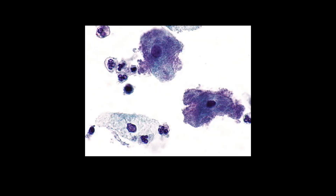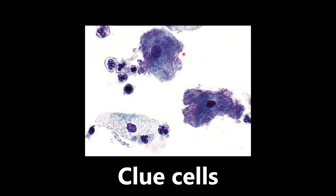Moving on to histology, we have an example of clue cells. What we're looking at is vaginal epithelial cells covered in Gardnerella bacteria, which is the cause of bacterial vaginosis. If we see one big cell covered in smaller Gardnerella bacteria like this, we want to be thinking clue cells and bacterial vaginosis.